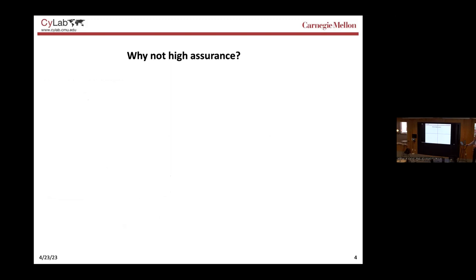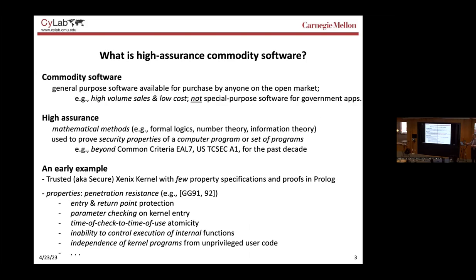Now the question is: why don't we have high assurance? By the way, these examples of penetration-resistant properties in C language implementations were actually the first of their type, because before that all we had were formal specifications or verifications of information flows — basically systems implementing mandatory access control policies, military controls, plus information flow to show you don't have egregious covert channels.